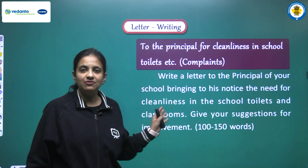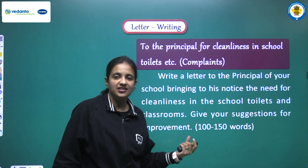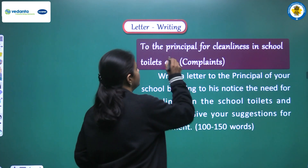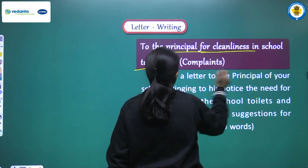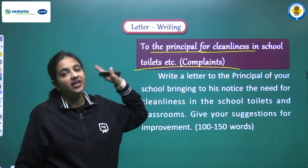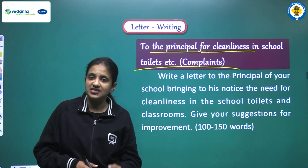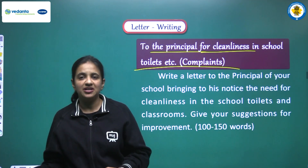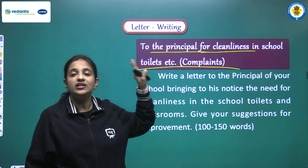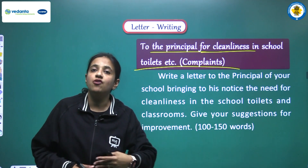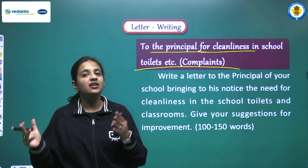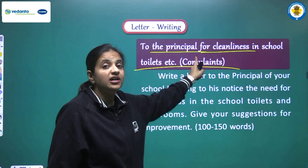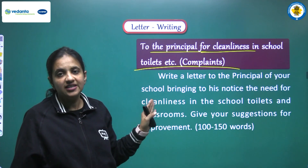So here we are having one question. First of all let's read the question and understand what things we have to cover in our letter. We have to write this letter to the principal about cleanliness in school toilets, and it will be a complaint letter. This is a formal letter because personal letters are written to family members or friends, but here we are writing to our school principal, so this is considered a formal letter and we have to use very formal language.